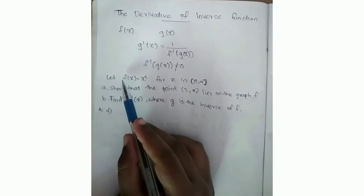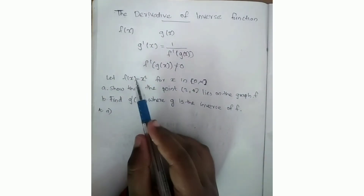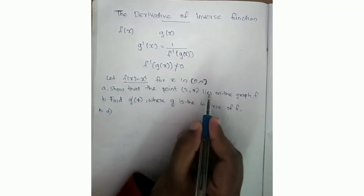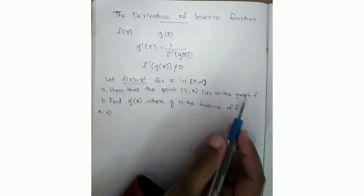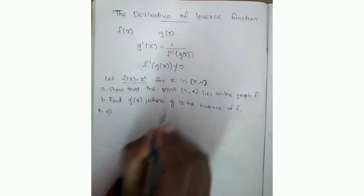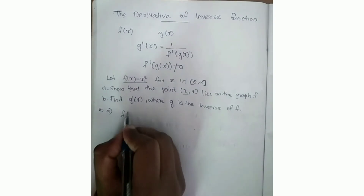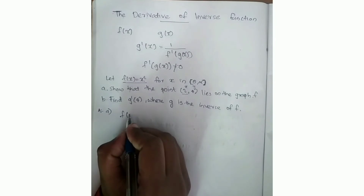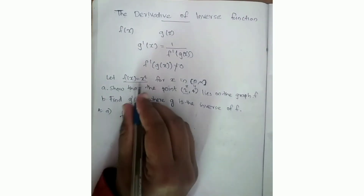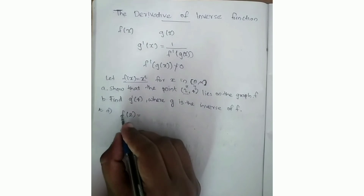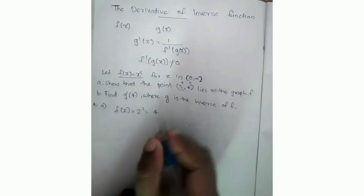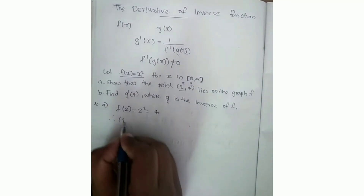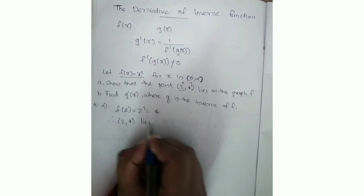Now we have a question. Let f of x equal to x squared for x in 0 to infinity. We have to show that the point 2, 4 lies on the graph of f. To prove this, we compute f of 2, which is 2 squared, equal to 4. Therefore, the point 2, 4 lies on the graph of f.